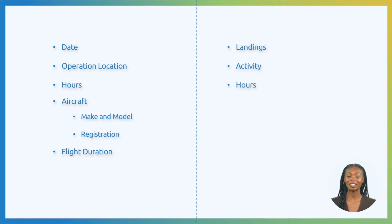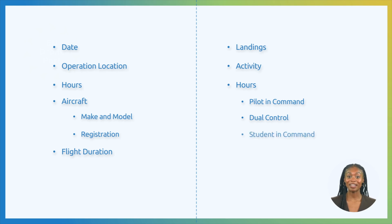Hours: this section will note the number of hours spent on each of the possible pilot roles. Usually they are recorded as pilot in command, but it could be different in some cases. Pilot in command: record the total hours flown as the pilot in command. Dual control: if using dual control for the flight, the user of the second control will note the total hours in this field. Student in command: for a student flying the aircraft entirely as the pilot in command, log the flight hours in this section.